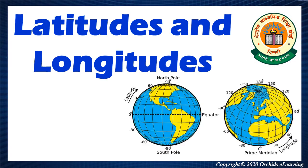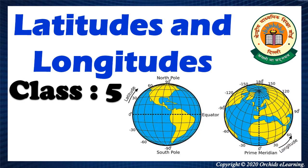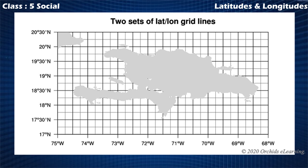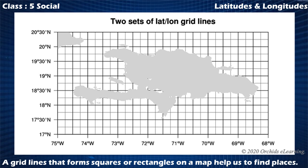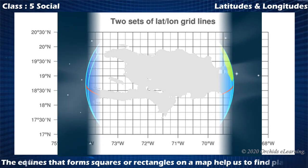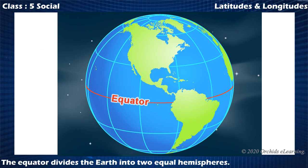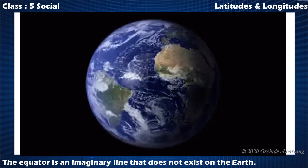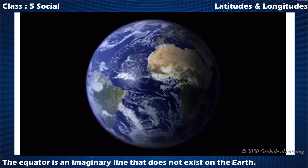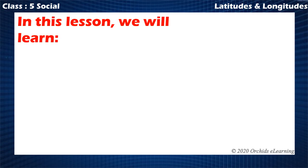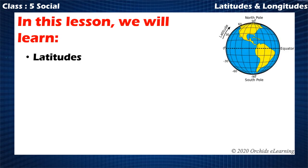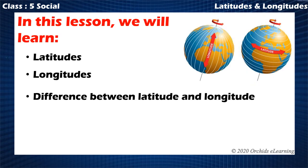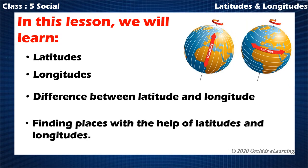Latitudes and longitudes — Class 5 Social Studies. Children, you have learnt earlier that grid lines form squares or rectangles on a map to help us find places. The equator divides the earth into two equal hemispheres. In this lesson we will learn about latitudes, longitudes, the difference between latitude and longitude, and finding places with the help of latitudes and longitudes.